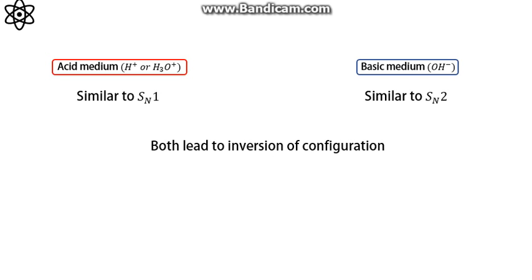Now one simple way to remember what happens in acid and basic medium. In the alphabetical order, A comes before B. Similarly in the numerical order, one comes before two. So you associate A with one and B with two. That's an easy way to remember and to predict the product in both of these mediums.